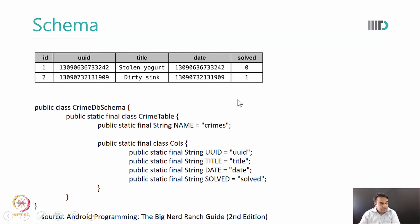Here is a very simple example. Suppose this is the table that we want to store in our program. This table has four fields: one is a UUID, one is a title, one is a date, and one is a solve field. There is also an ID field which we would ideally like to get automatically generated.